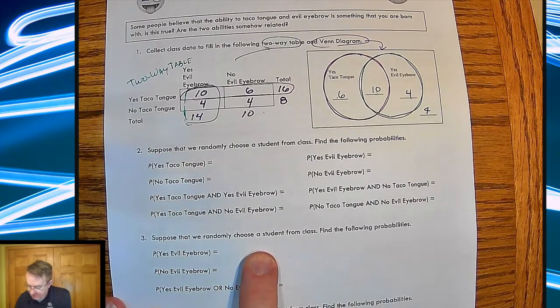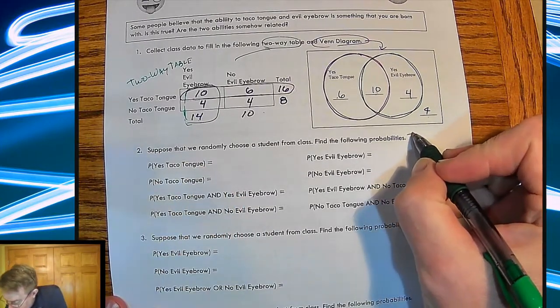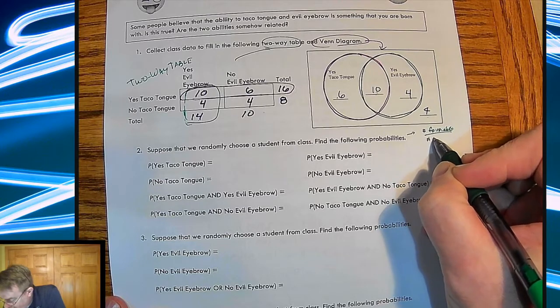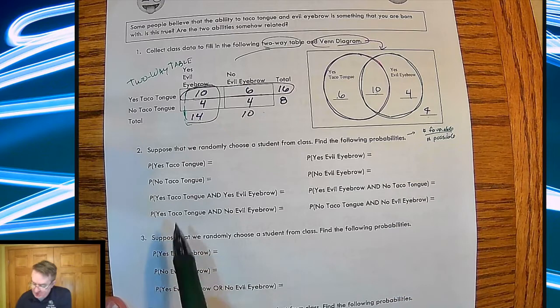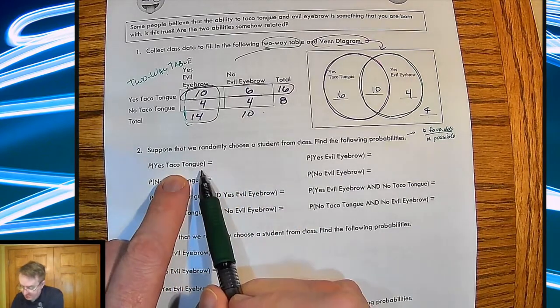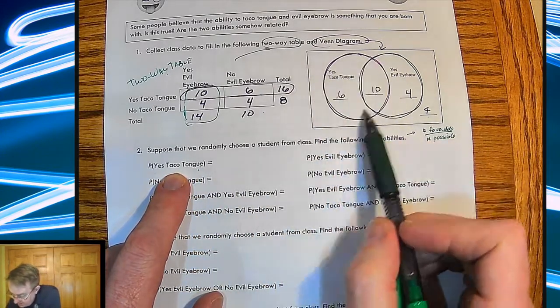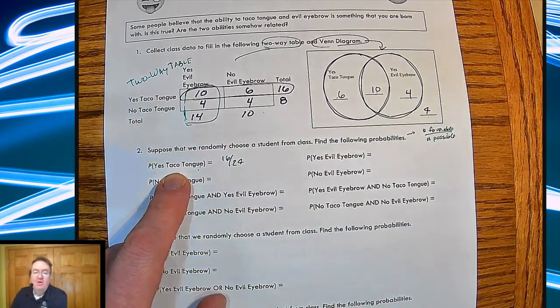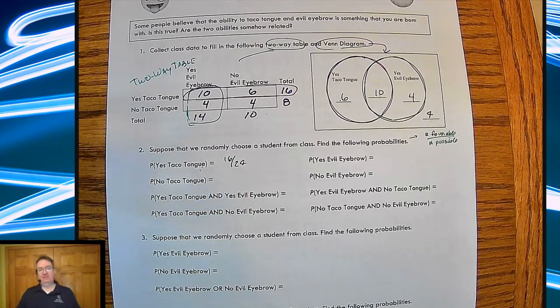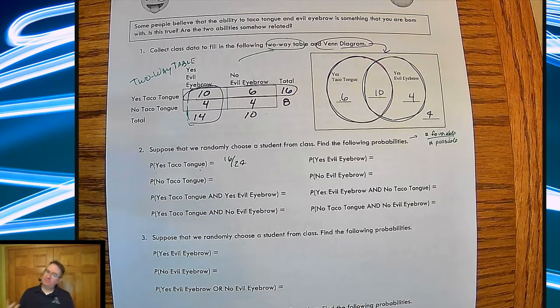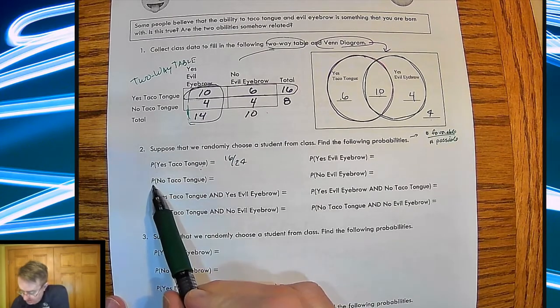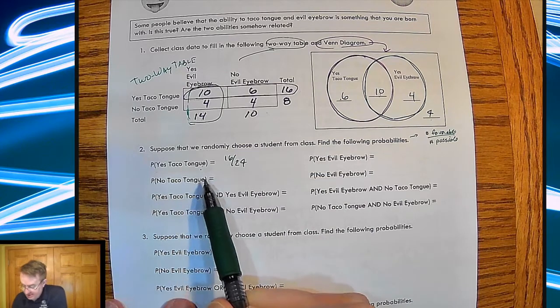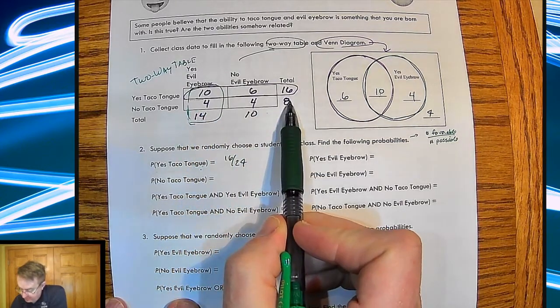So now what we're going to end up doing is we're going to ask what probabilities are. Now, so now again, remember probabilities are the number of favorable over the number of possible, or the total number. So here, yes, can taco tongues. So this is a student from the class. So if we pick one, what's the probability that they can taco tongue? Well, how many kids can taco tongue? We have a total of 16 taco tongues out of the 24. Usually it's a good idea to leave the fraction like this, because then you can get a sense of how big the scale is. If you were to reduce that down to two thirds, is it wrong? Depending upon the context, yes, to be honest. So I just usually say, leave it as such. Probability that there's no taco tongue. Well, how many no taco tonguers are there? Eight. So that's going to be eight out of 24.